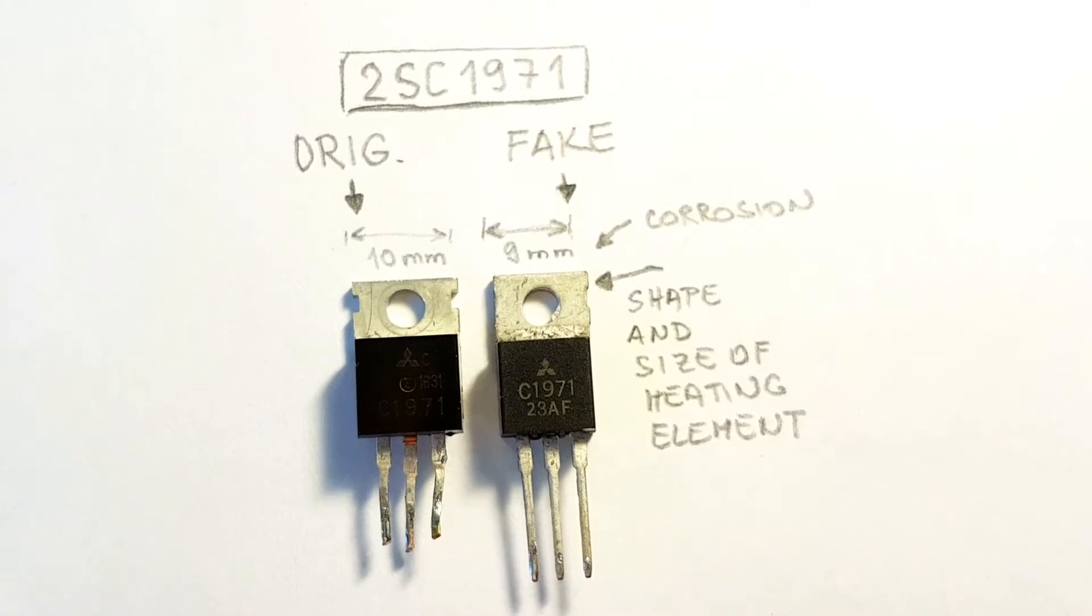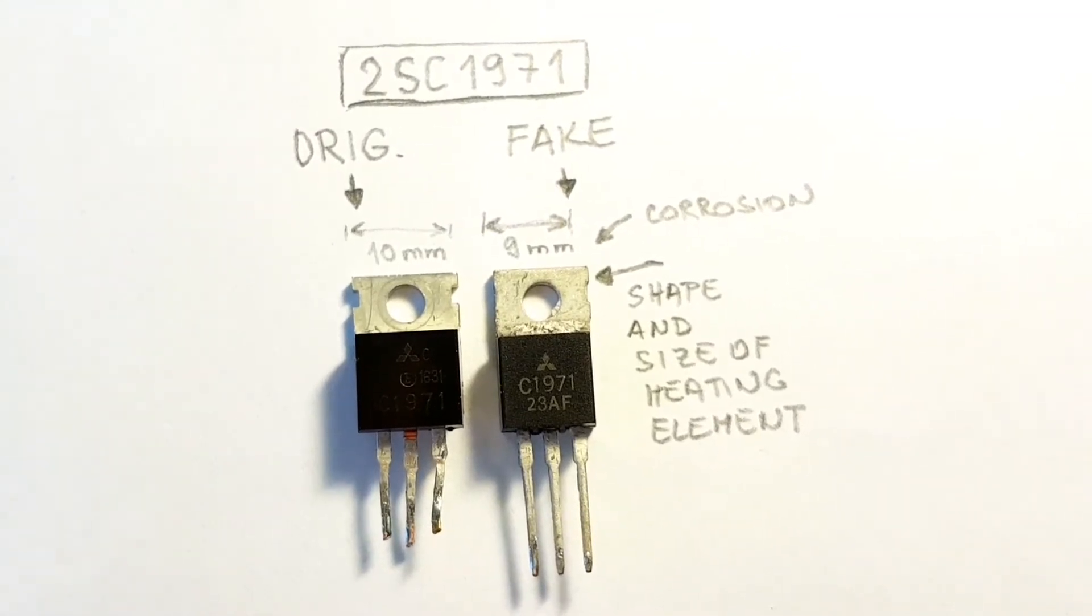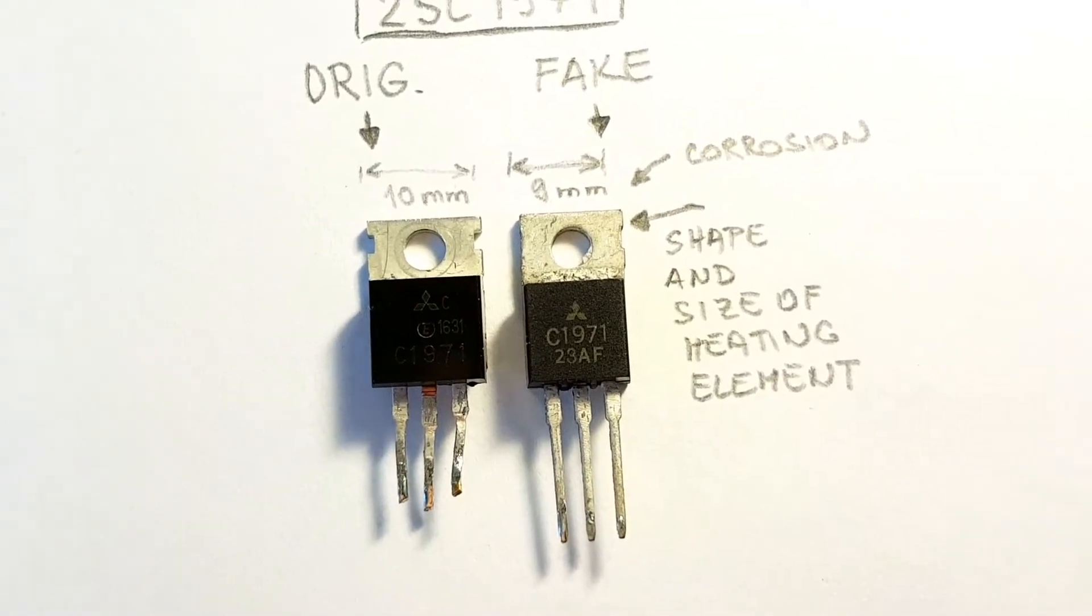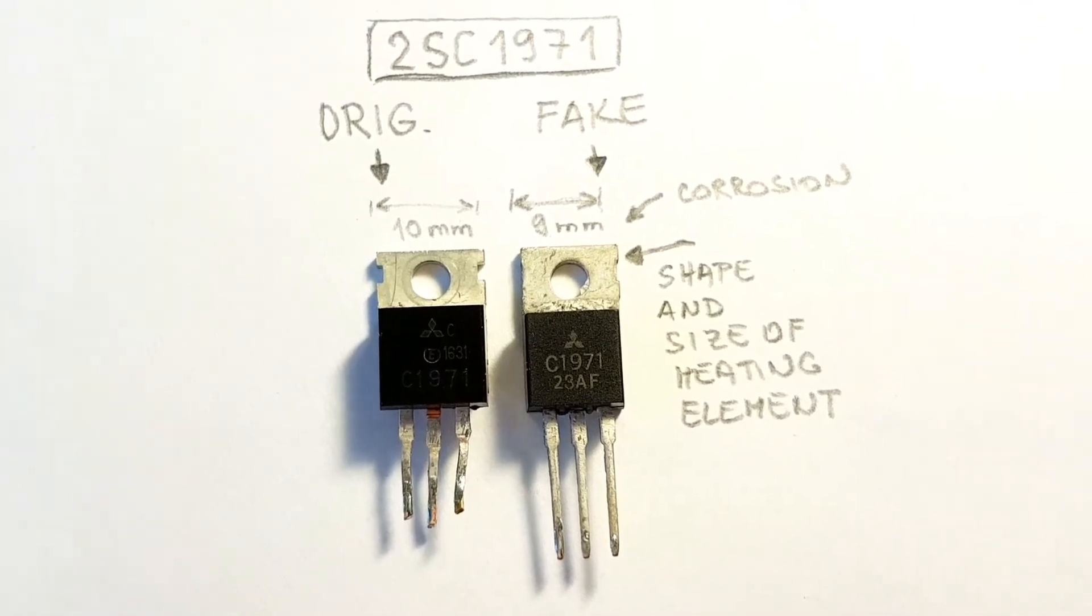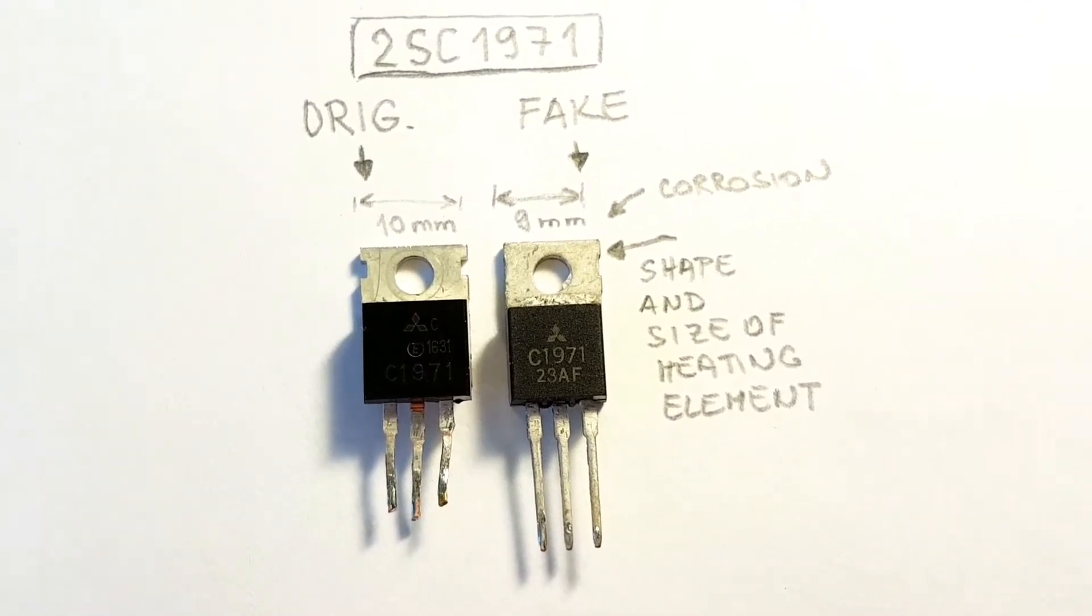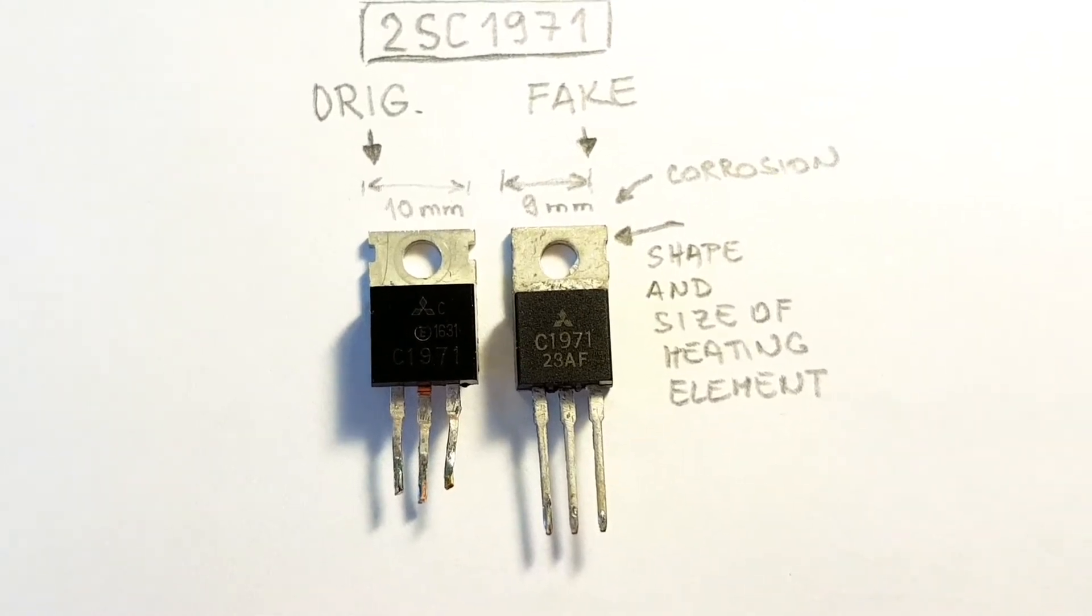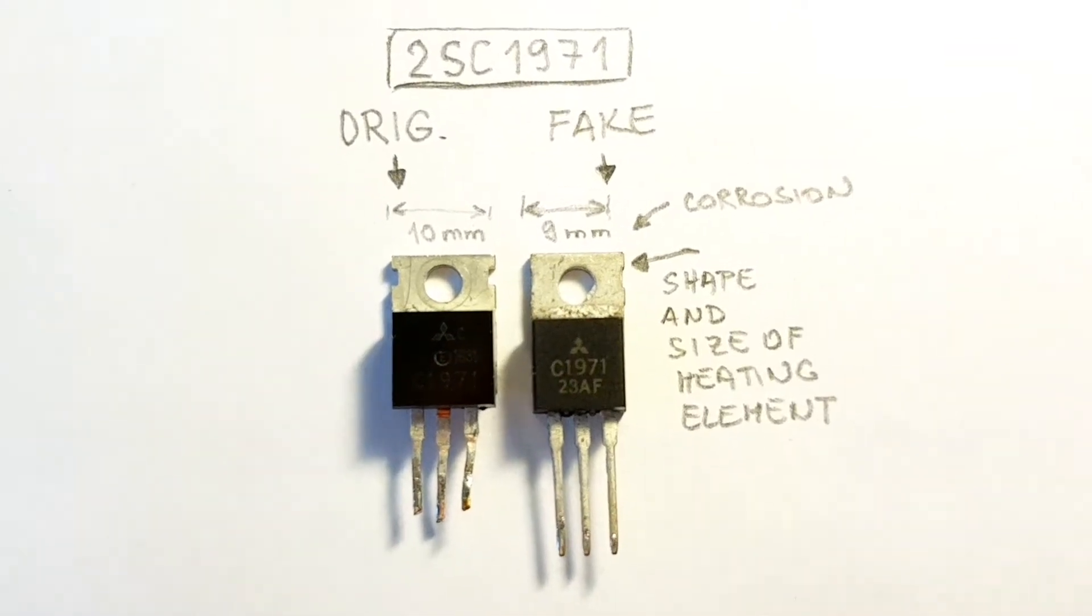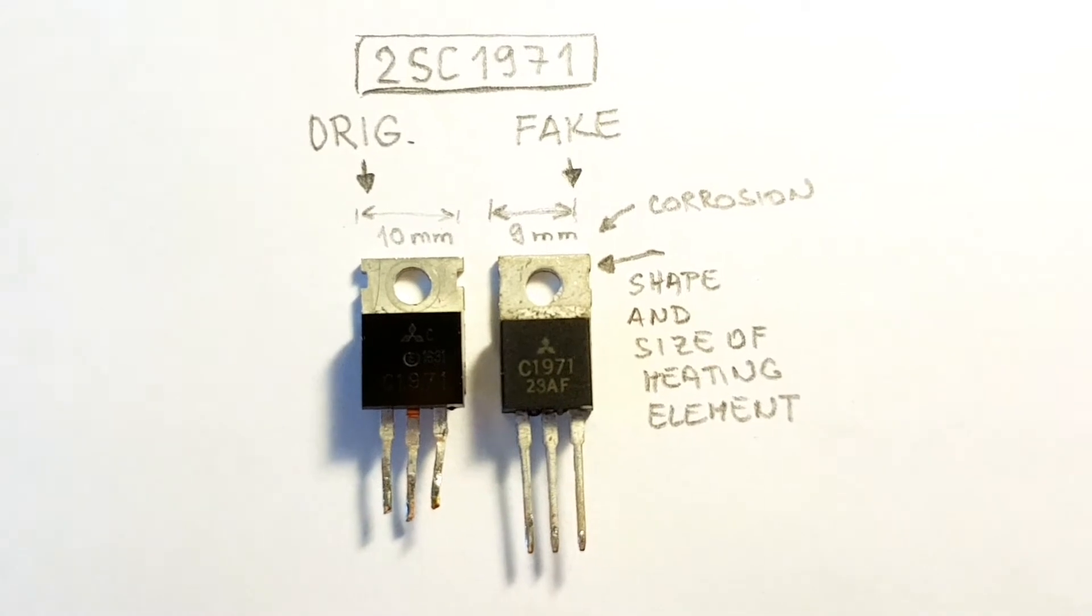Probably will come the fake one. In my case I want to show you the 2SC1971, this is the VHF power amplifier transistor NPN. In my case I ordered this transistor from AliExpress from China.